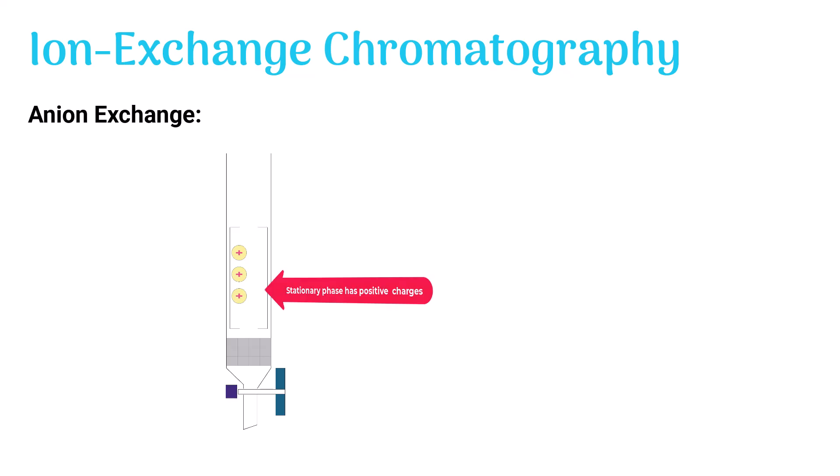In case of anion exchange, the ion exchanger has positive charges on it. When the mixture is poured into the column, the stationary phase attracts negatively charged molecules or anions from the mixture and retains them. Other molecules are then washed away from the column.